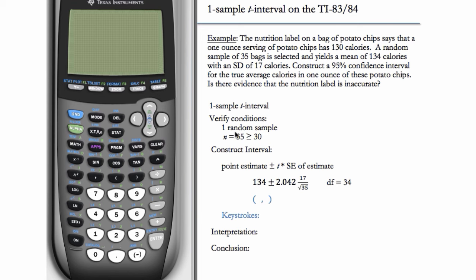To answer this, we will find a one-sample T interval. We have one sample and we're dealing with a mean, so this makes sense. We verify our conditions. We have one random sample and our sample size is 35, which is at least 30, so that is satisfied and we don't need to look further at the data. If the sample size were smaller than 30, we would have to make a plot of the data and inspect the data.